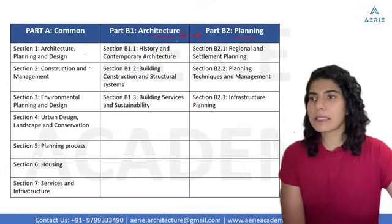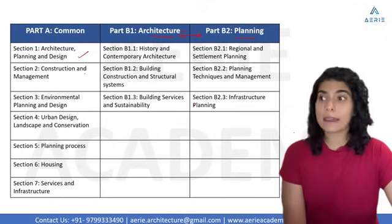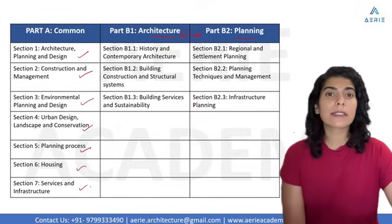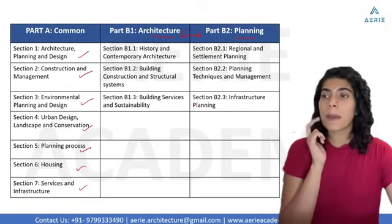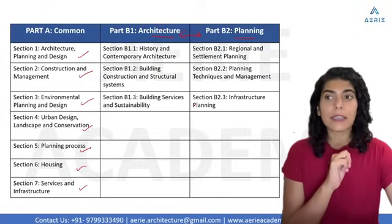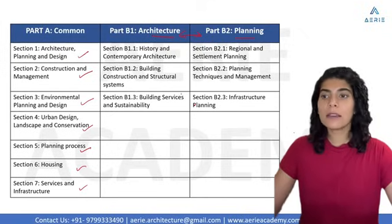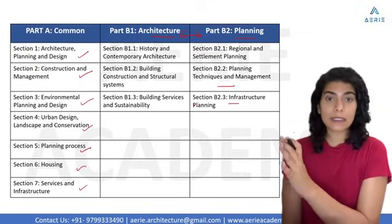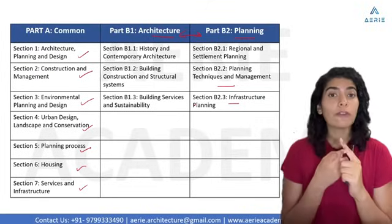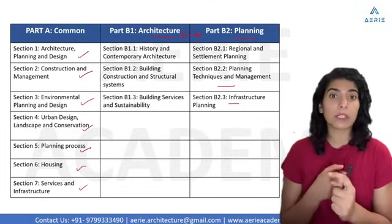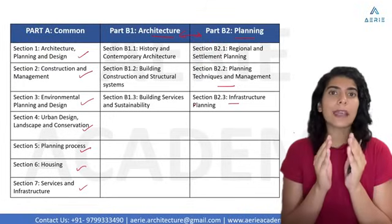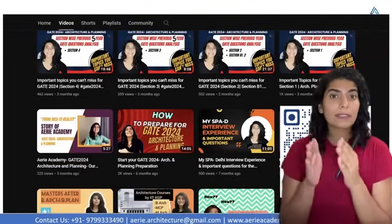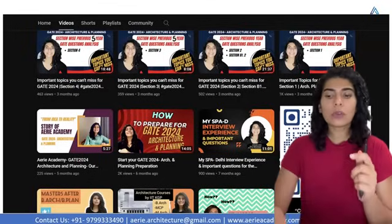In Part A there are seven sections: architecture, architecture planning and design, construction and management, environmental planning and design, urban design, landscape and conservation, planning process, housing, services and infrastructure. Part B1 has history, building construction and structural system, and building services and sustainability. Part B2 (planning) has regional and settlement planning, planning techniques and management, and infrastructure planning. In my previous videos, I have discussed these sections in detail — what kind of questions GATE asks, difficulty level, and important topics — links are in the description below.